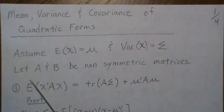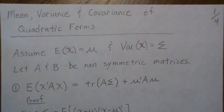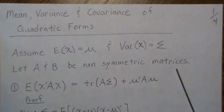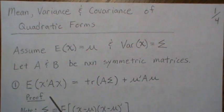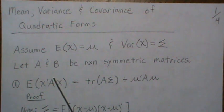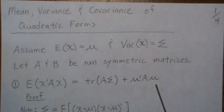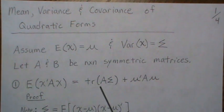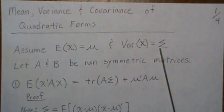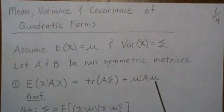Let a and b be n by n symmetric matrices. We want to show that the expected value of this quadratic form is equal to the trace of A times the variance-covariance matrix, plus this quadratic form.